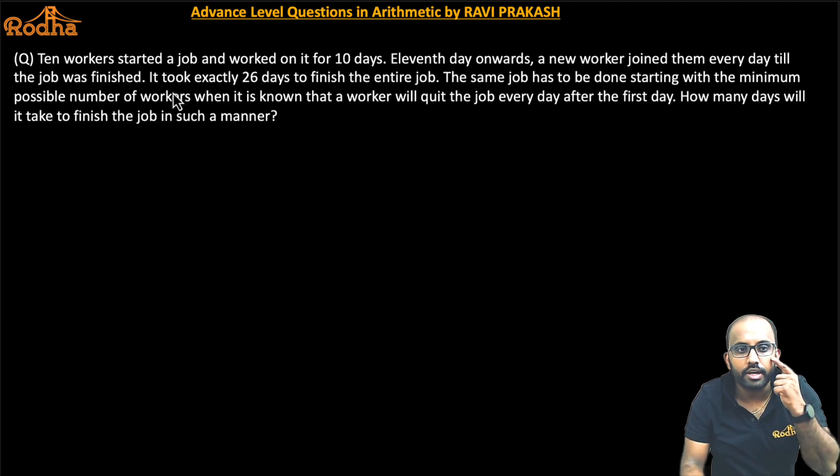This question says that 10 workers started a job and worked on it for 10 days. 11th day onwards, a new worker joined them every day till the job was finished. It took exactly 26 days to finish the entire job. The same job has to be done starting with the minimum possible number of workers where it is known that a worker will quit the job every day after the first day. How many days will it take to finish the job in such a manner?